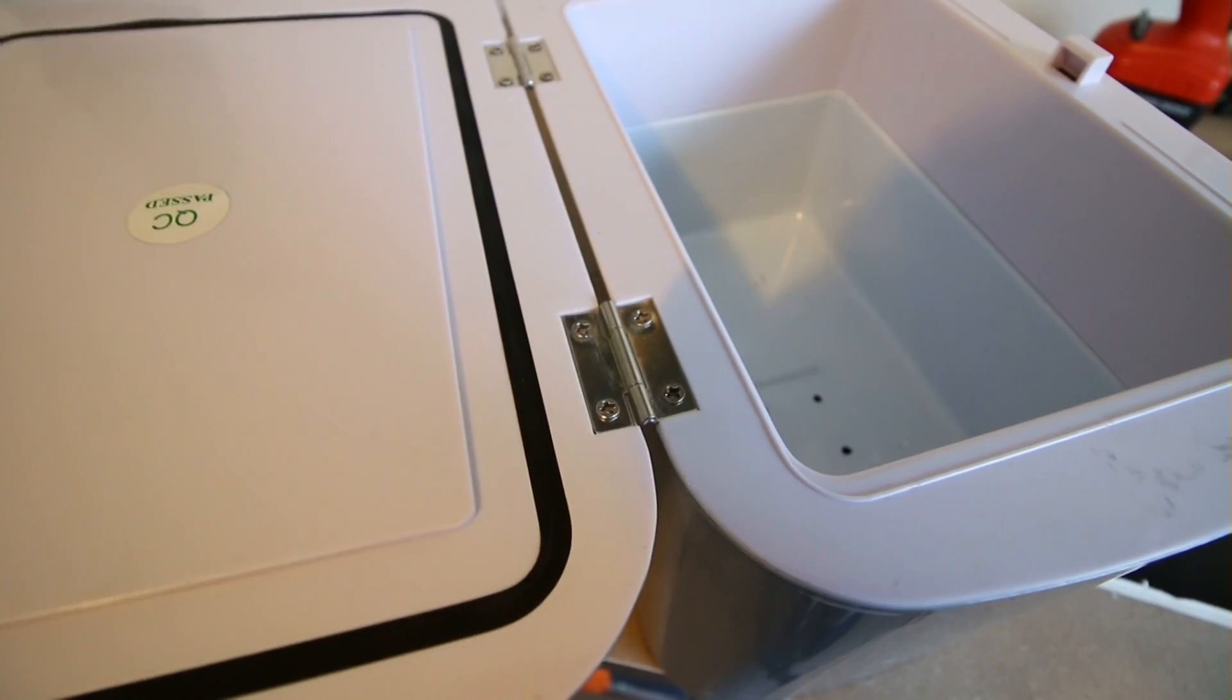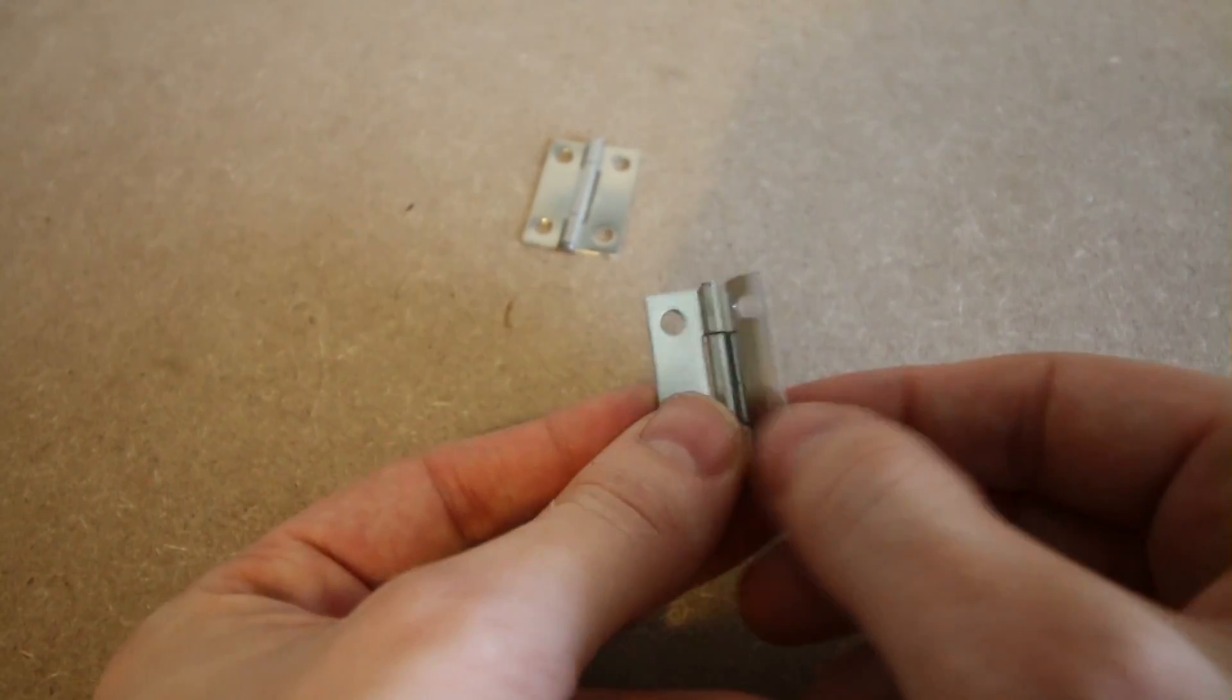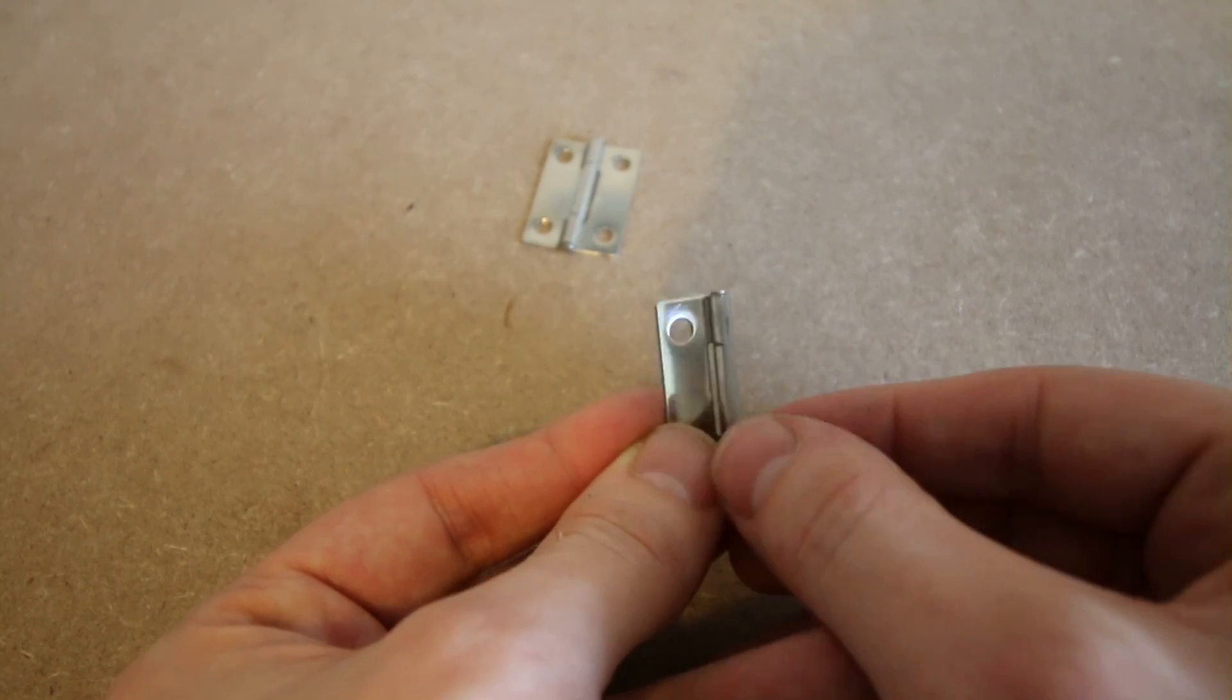After that I managed to locate some of these small hinges off an old miniature fridge. Once unscrewed I used these as hinges for the safe.